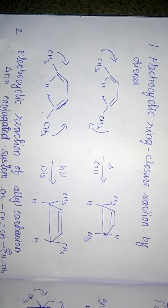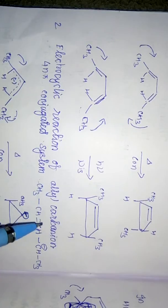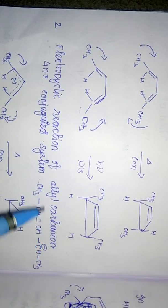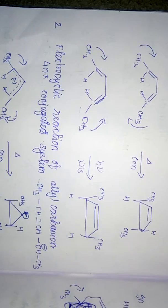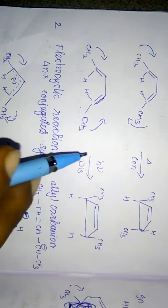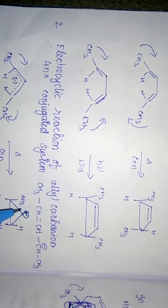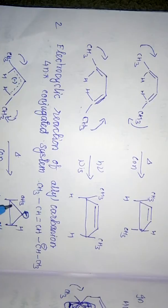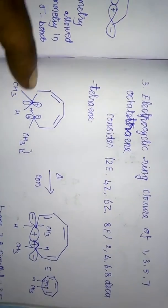Now we look at electrocyclic reactions of the allyl carbanion. This is also a 4π conjugated system. For a 4π system under thermal conditions, conrotation applies. On conrotation, both methyls rotate clockwise, giving a trans isomer — specifically the trans isomer of the cyclopropenyl anion.